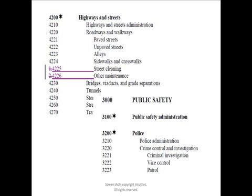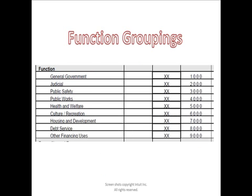Here are the function groupings, just like we saw for the revenue side — driven by the first digit. There are nine different functions: General Government starts with 1, Judicial starts with 2, Public Safety starts with 3, Public Works starts with 4, and so on. Before setting up QuickBooks expenditures, the very first thing you should do is figure out what departments and functions you want to set up, because that will drive a good bit of your setup process.